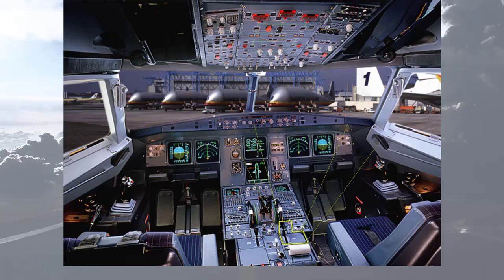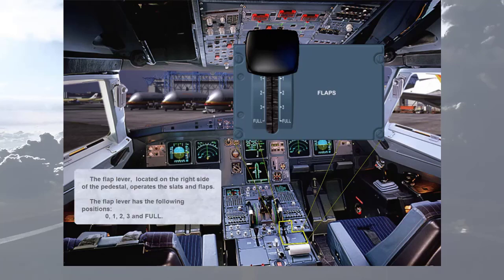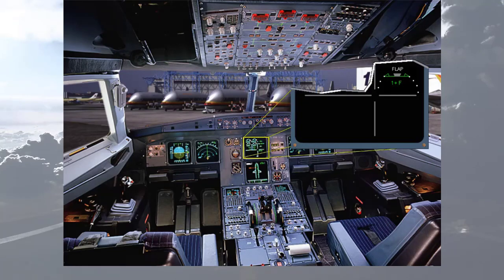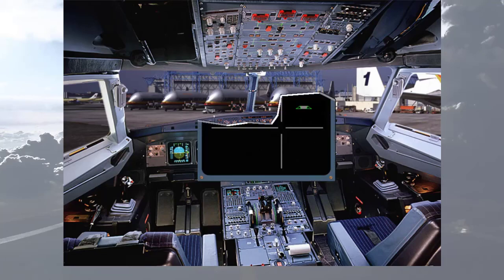The flap lever, located on the right side of the pedestal, operates the slats and flaps. The flap lever has the following positions: 0, 1, 2, 3 and 4. The flaps and slats information is shown on the engine warning display. The flap and slat positions are indicated by white dots. Here the surfaces are extended to position 1 plus F. This is the flap zero indication. Notice there is no labeling with this setting.